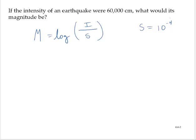So, using this information in our problem, the value for I is 60,000. Then the magnitude would be the logarithm of 60,000 over 10 to the negative fourth power.